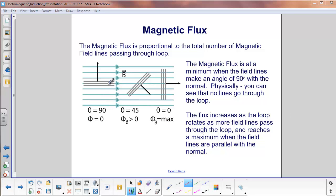Continuing, you can see that the magnetic flux is a minimum when the field lines make an angle of 90 degrees with the normal. Physically, you can see that none of these field lines are going through the loop. Some are going over the top, some through the bottom, but none are going through. We start rotating the loop, and you can now see that the field lines are going through, but you're not presenting a full cross-sectional area to the field lines here. They're kind of spread out.